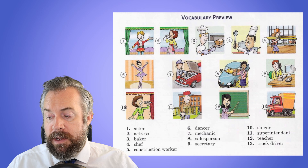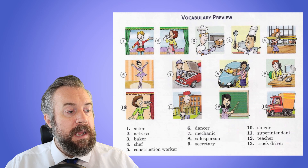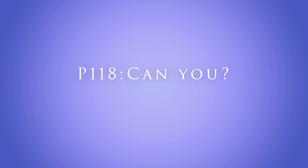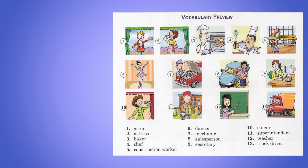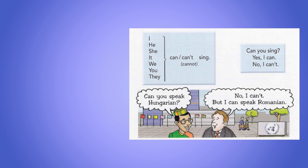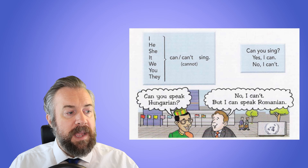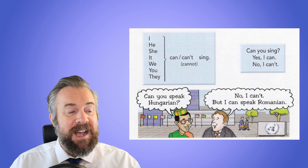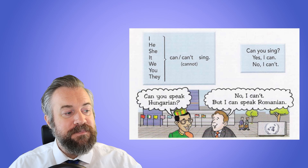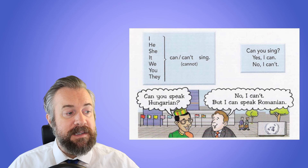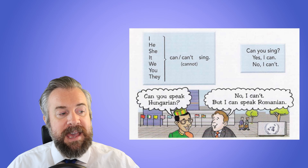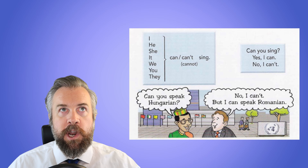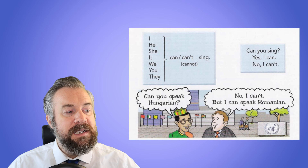We'll be using that vocabulary to talk about ability — can and can't. The structure is: I can, I can't. For example: I can sing, or I can't sing. He can, she can, it can, we can, you can, they can sing. Or: I can't, he can't, she can't, it can't, we can't, they can't — cannot or can't.